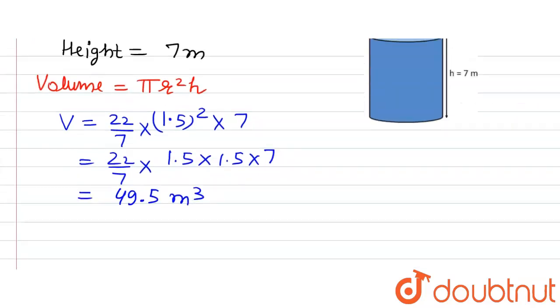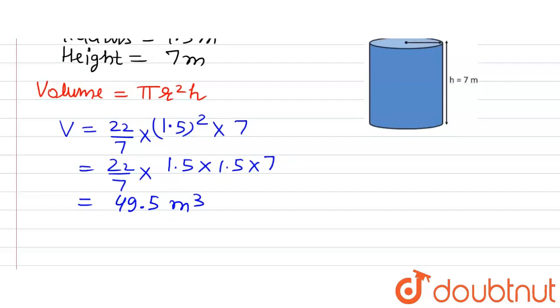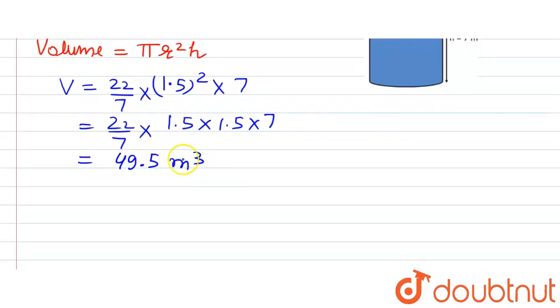Meter cube is because the radius and height are in meters, so the volume should also be in meters. 49.5 meters cube is the volume.